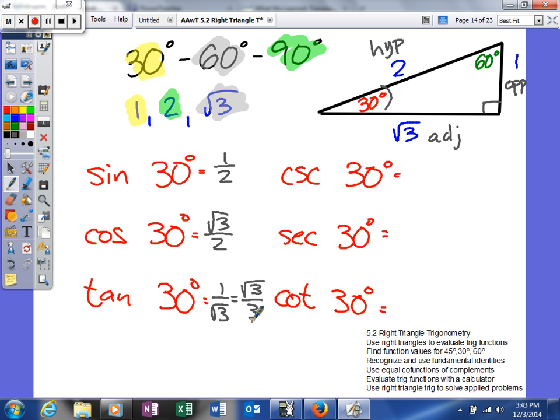To find the secondary trig functions, all we have to do is take the reciprocal of the primary ones. So this will be 2 over 1, which is 2. Here, we'll get 2 over the square root of 3, which needs to be rationalized. And we'll do that here in just one second. And I can actually take this and take the reciprocal, so that way I won't have to rationalize my answer. It'll just give me the square root of 3. Just showing you how we can do this, we'll multiply the top and the bottom by the square root of 3. So our answer now will be 2 square root of 3 over 3.